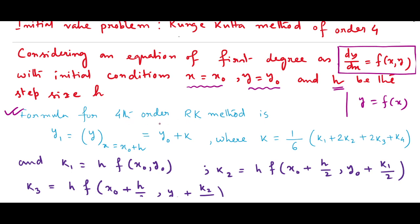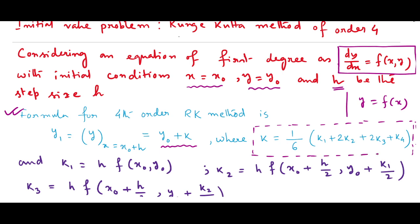The formula for RK method of order 4 is: y1 equals y-naught plus k, where we are finding the value of y at the point x equals x-naught plus h. The value of k is defined as 1/6 times (k1 plus 2k2 plus 2k3 plus k4). We need to find k1, k2, k3, and k4 individually.